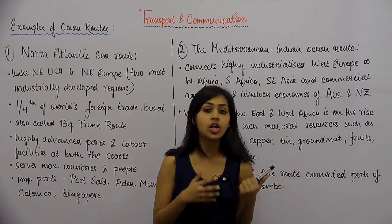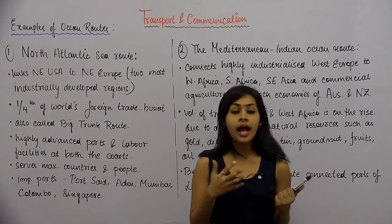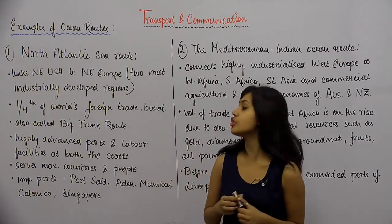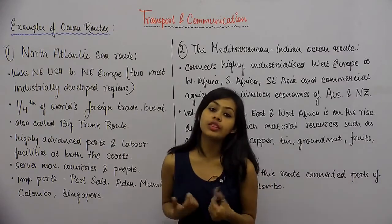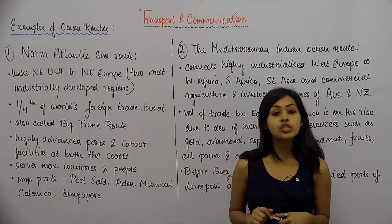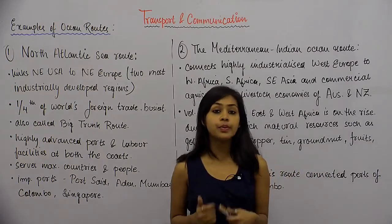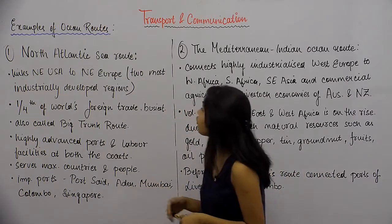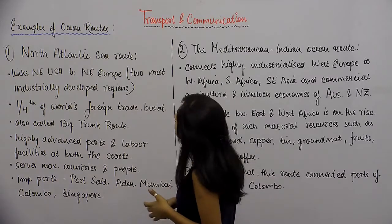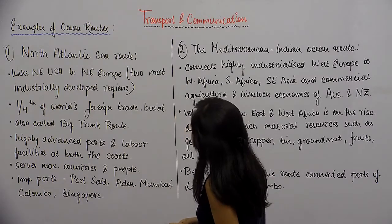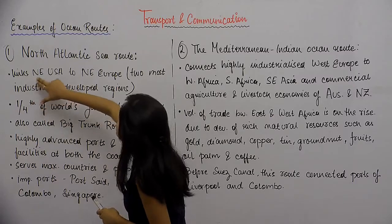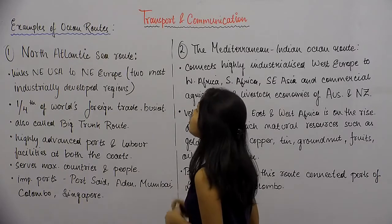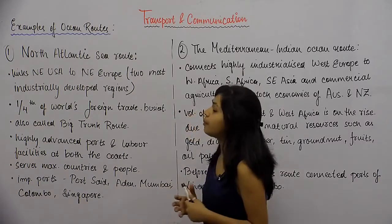The North Atlantic Sea Route basically connects Northern America and the West European region. It's the most important and the busiest trade route. It links North East USA to North East Europe, which happen to be the two most industrially developed regions.